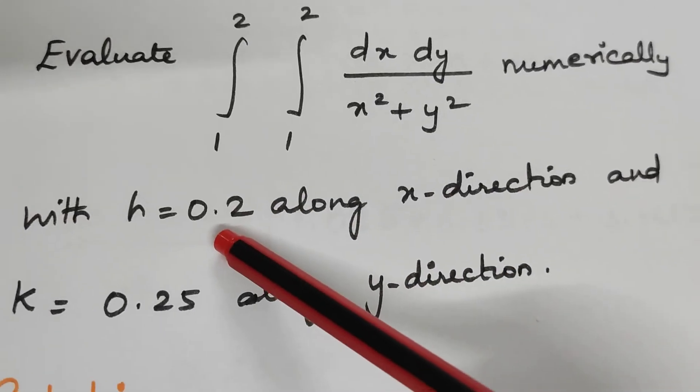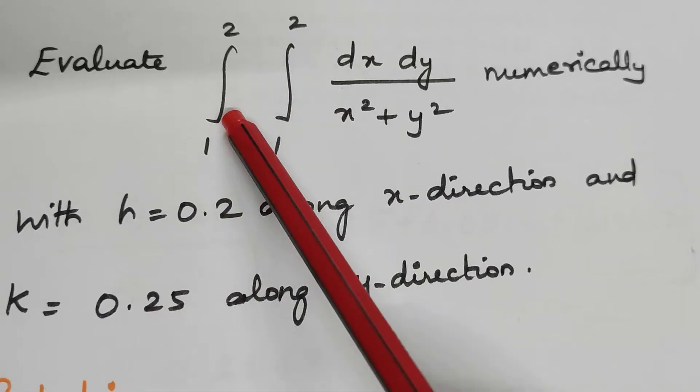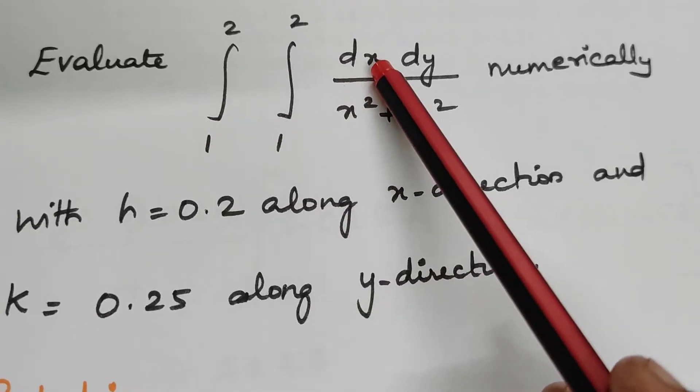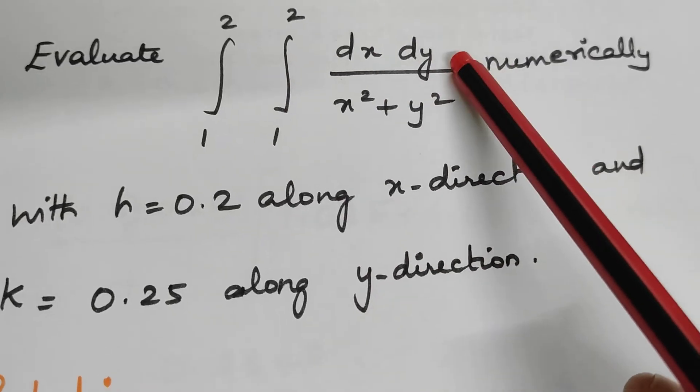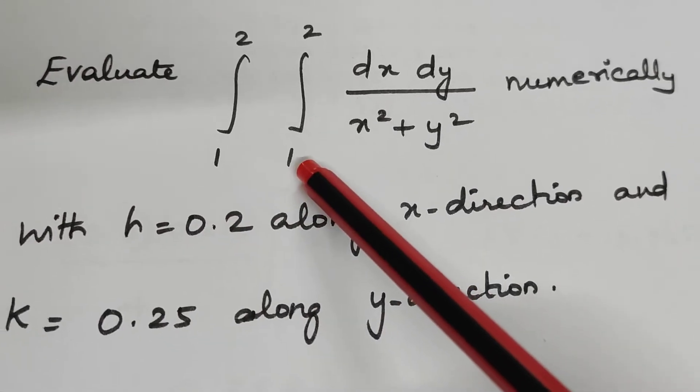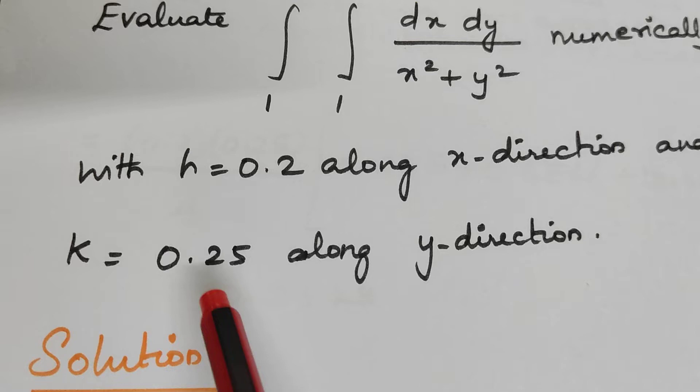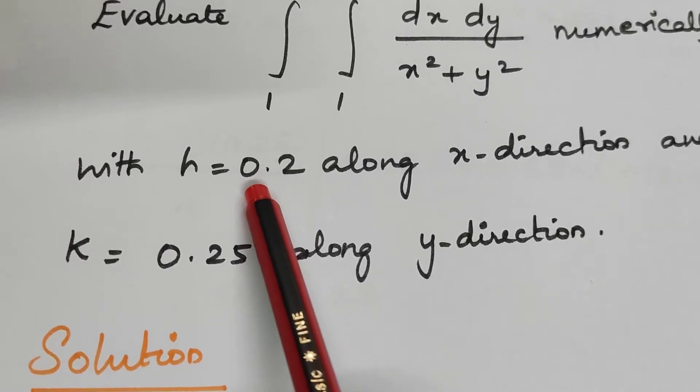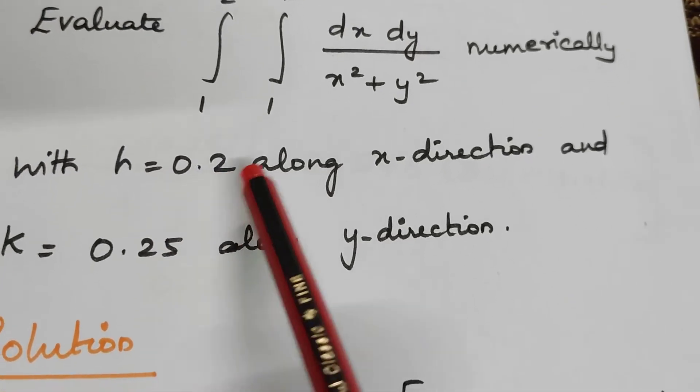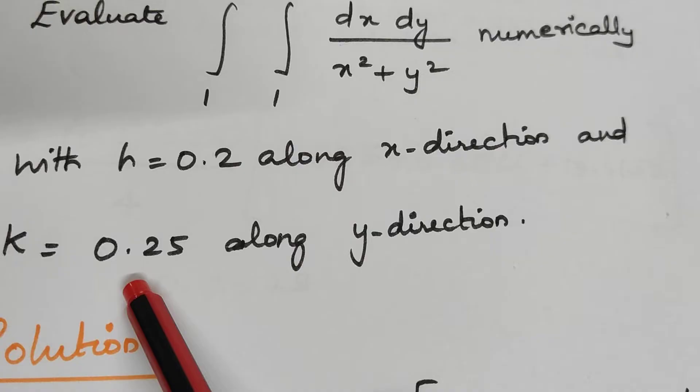With h equals 0.2 along the x direction and k equals 0.25 along the y direction. You know h value, that is the incremented value, is only for x and k is for y. The inner integral belongs to the dx variable and the outer integral belongs to dy. You should observe that x direction means horizontal values and y direction means vertical values.